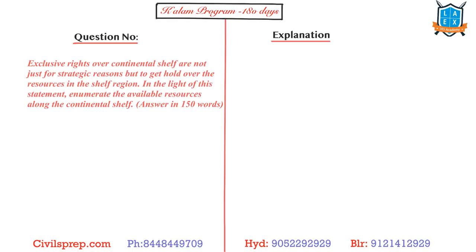Exclusive rights over continental shelf are not just for strategic reasons but to get hold over the resources in the shelf region. So as you are aware, EEZs will extend till continental shelf - that's what they're trying to tell. In the light of this statement, enumerate the available resources along the continental shelf. I want you to see here that they're not asking about the resources which are present in the ocean. If they're talking about resources present in the ocean you need to talk about both continental shelf and slope everything, but I want you people to talk mostly about the continental shelf.